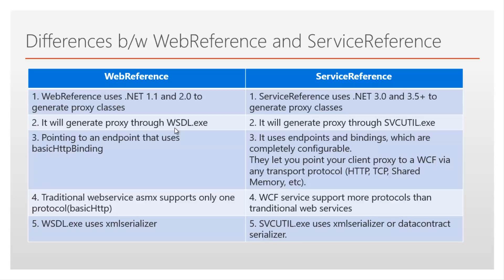Web reference generates proxy through WSDL.exe, and service reference generates proxy through svcutil.exe. Web reference points to an endpoint of basic HTTP, while service reference supports all protocols like HTTP, TCP, shared memory, etc. Traditionally, ASMX web services support only one protocol — basic HTTP — whereas WCF services support more protocols than traditional web services. WSDL.exe uses XML serializer for communication, and svcutil.exe uses XML serializer or data contract serializer.